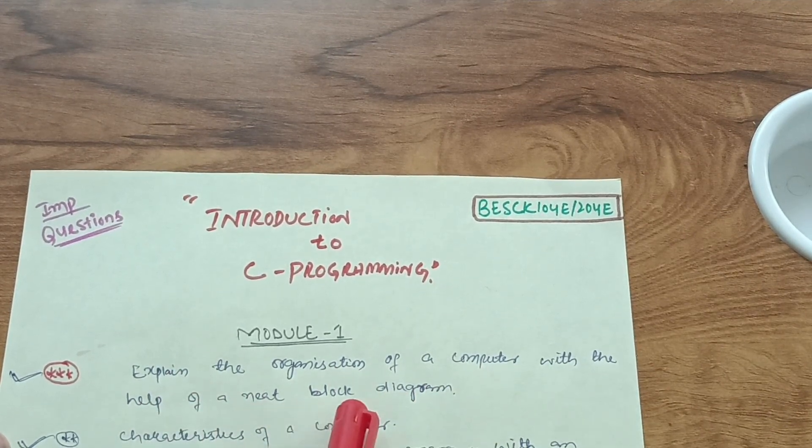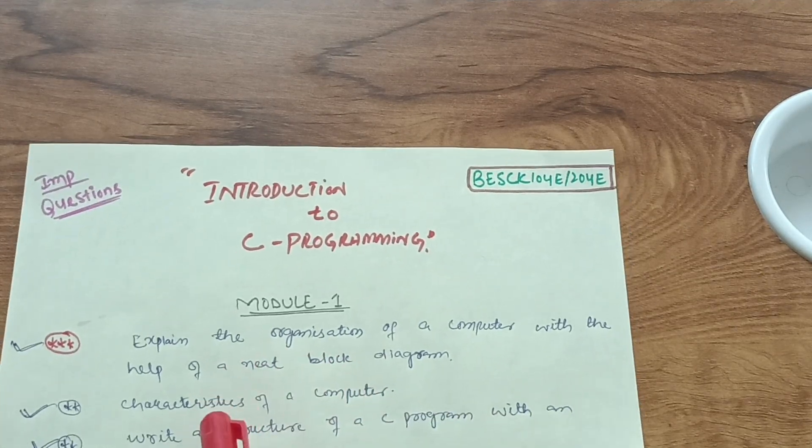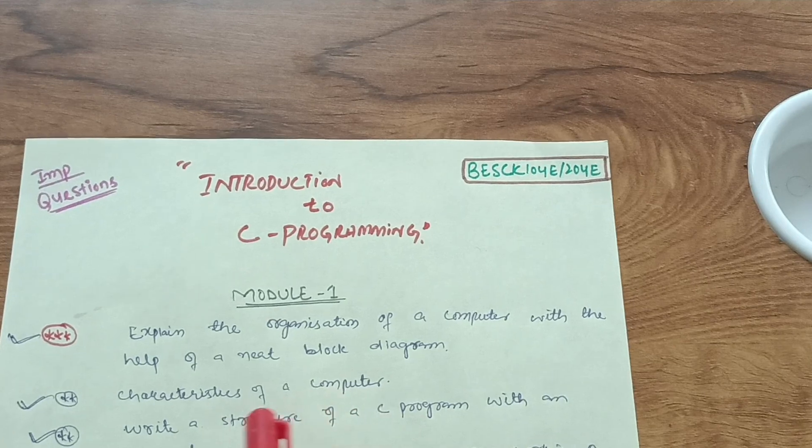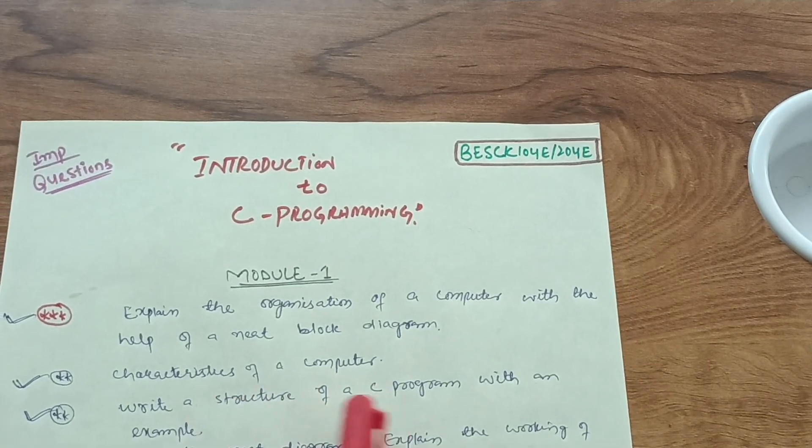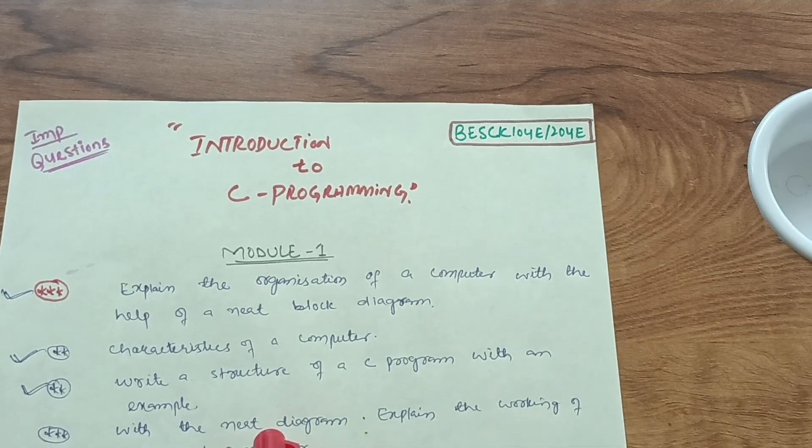This is an important question. Next one is the characteristics of a computer. Write the structure of C program with an example, and with the neat diagram explain the working of CRT and LCD monitor.